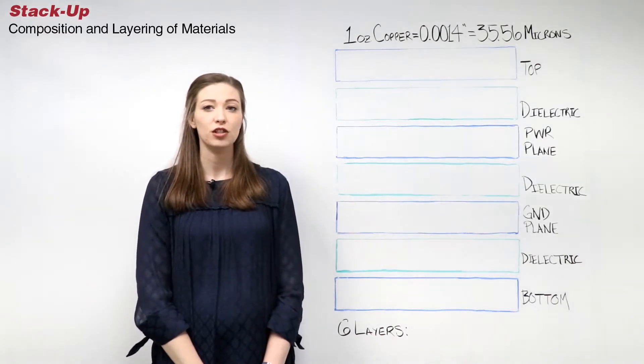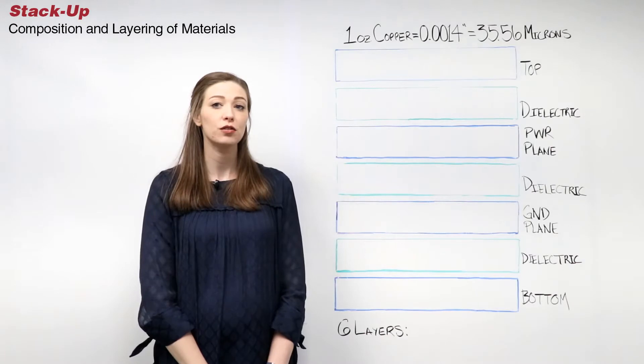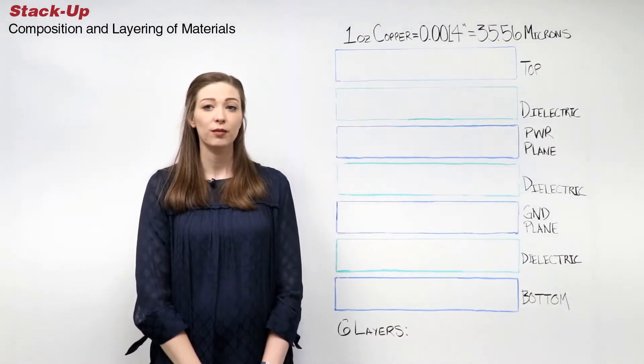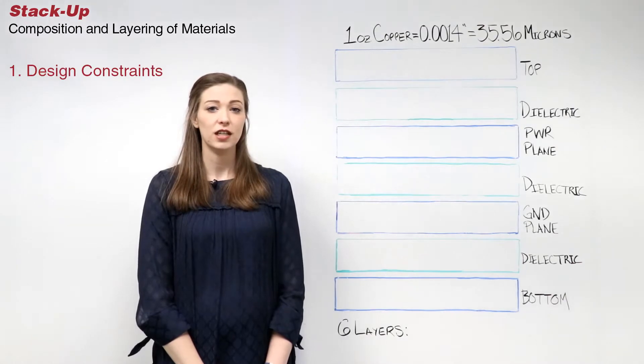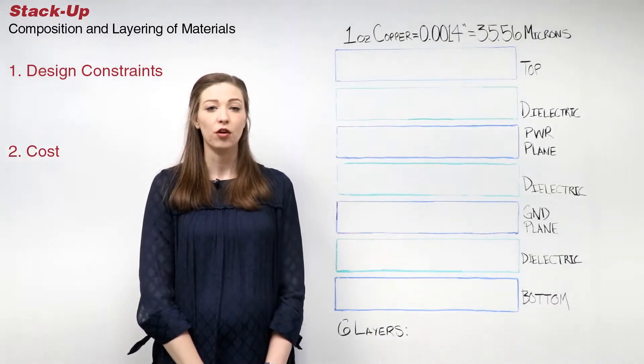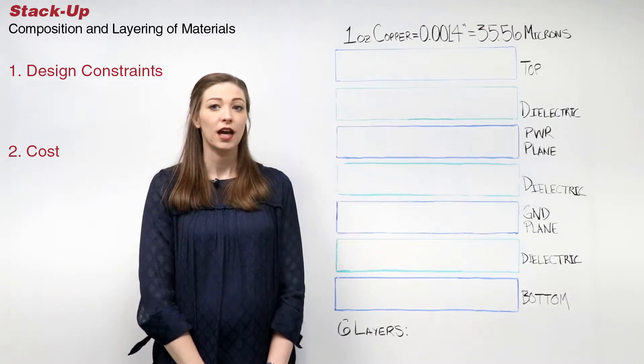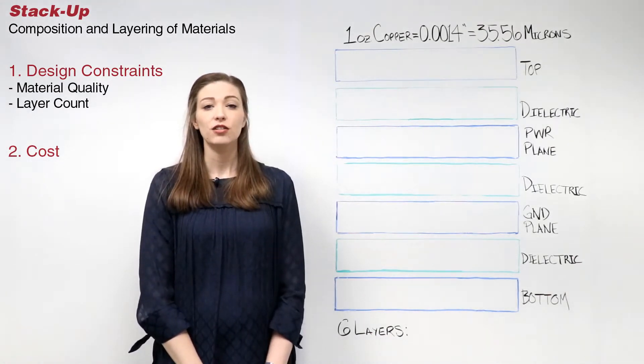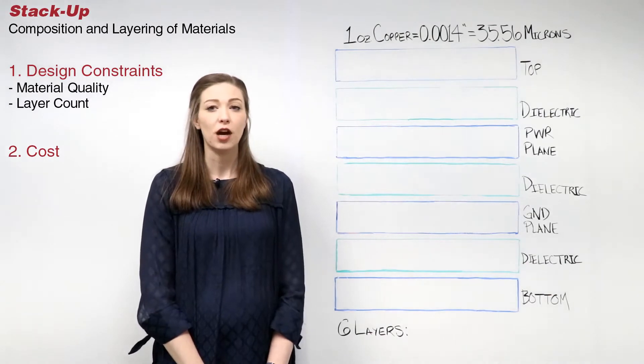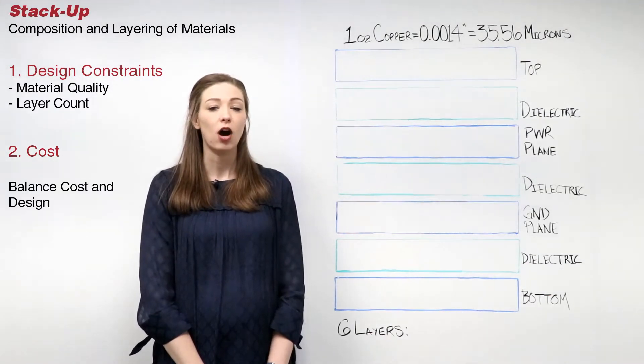The stack up is the composition and layering order of the materials used in the PCB. When determining the PCB stack up, two factors need to be considered: design constraints and cost. Design constraints define the performance of the electrical attributes and control factors like material quality and layer count. The key to creating the best PCB stack up for your project is creating a balance between cost and design.